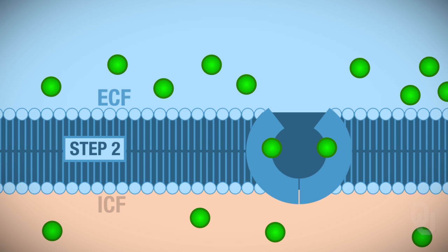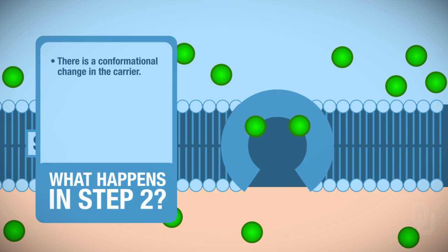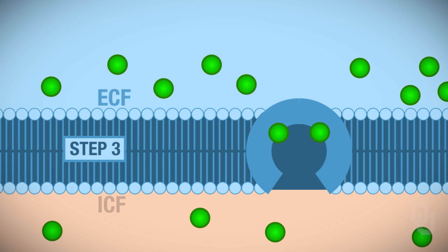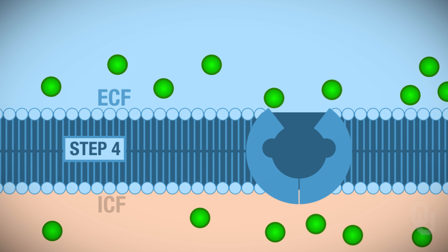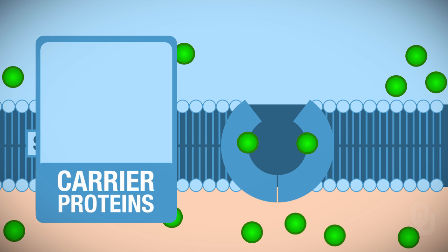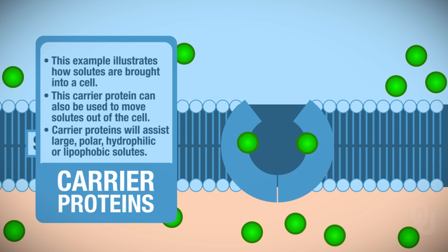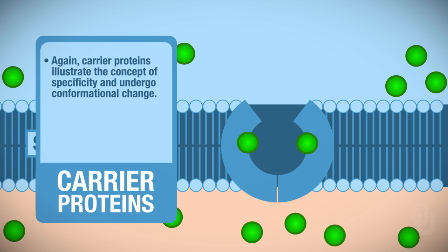In step 2, there is a conformational change in the carrier. Carrier molecules not only illustrate specificity but also undergo a conformational change. In step 3, the solute is released to the intracellular fluid once that conformational change has occurred. In step 4, the carrier protein reverts back to its original conformation so it can transport more solute into the cell. Carrier proteins can also transport a solute out of the cell — either way, carrier proteins assist large, polar, hydrophilic, or lipophobic solutes and illustrate specificity while undergoing a conformational change.